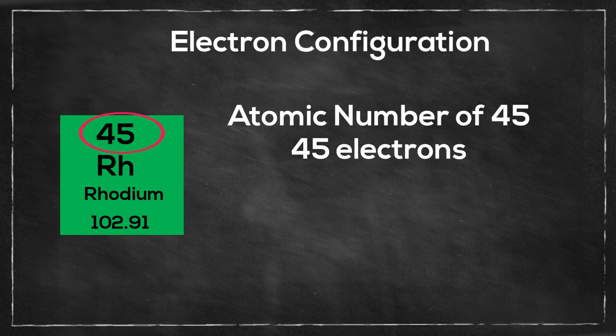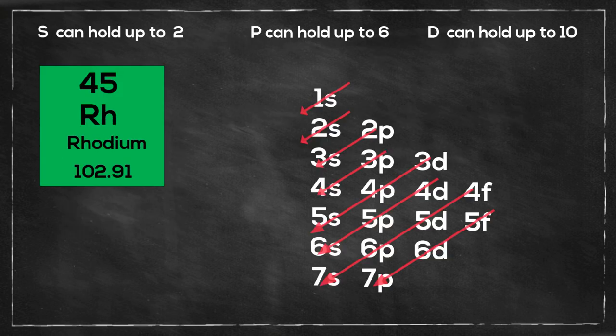First we need to see how many electrons rhodium has. It has an atomic number of 45, so it will have 45 electrons. I will start at 1s.